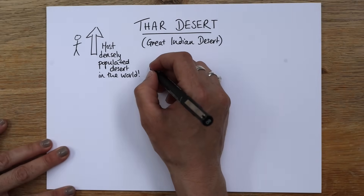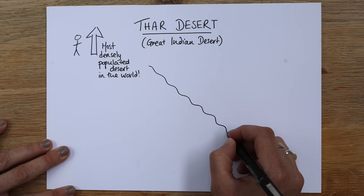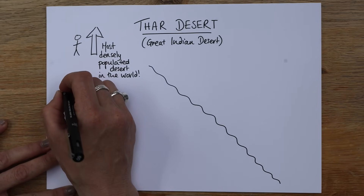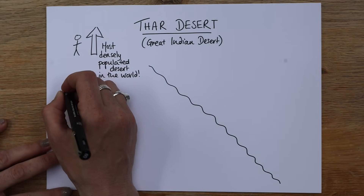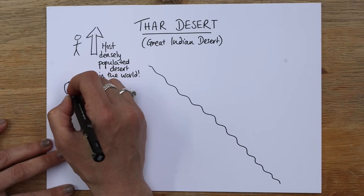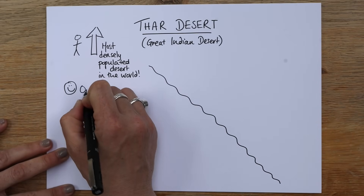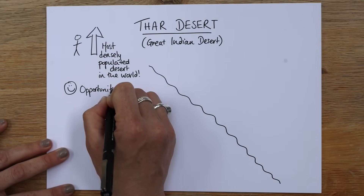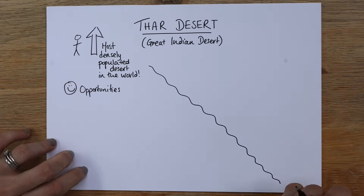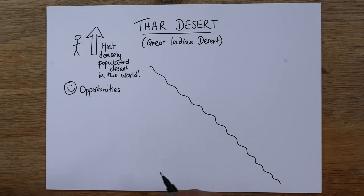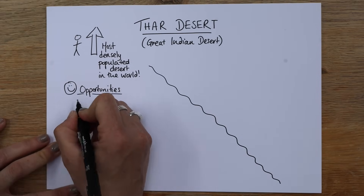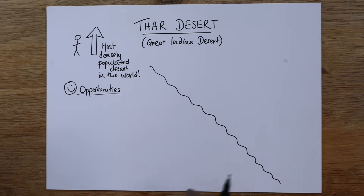If we split the page and draw a line, we're going to have opportunities on one side. This is the kind of GCSE question you could get: what opportunities are there in this desert environment? Or what challenges are there? And how are they managing to live there? So there are a lot of opportunities. You might think of a desert as just this arid, dry land with nothing going on — but that's not the case.